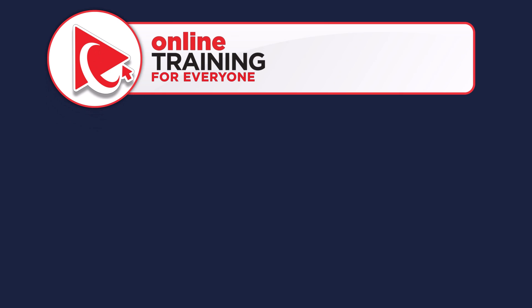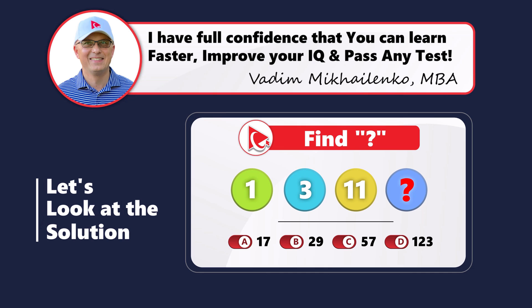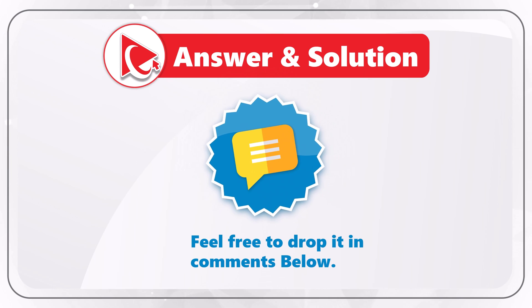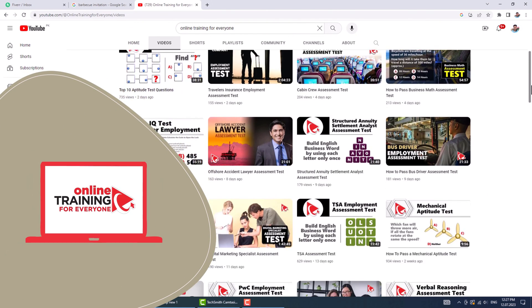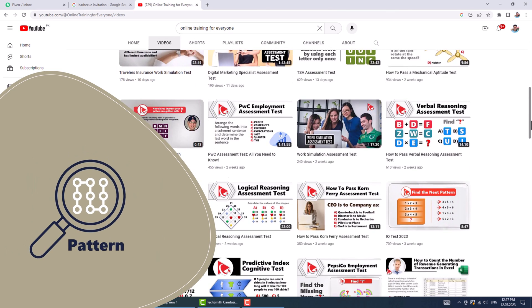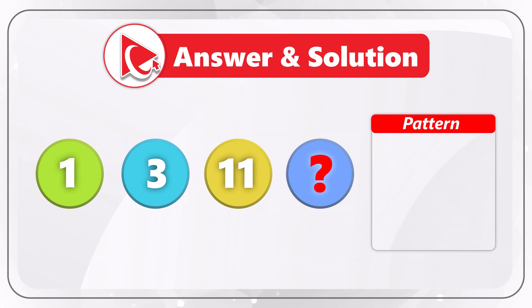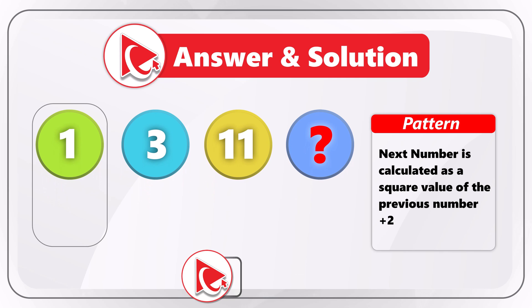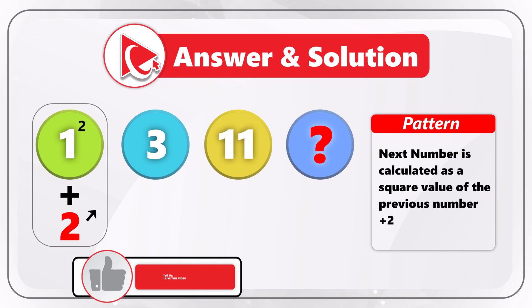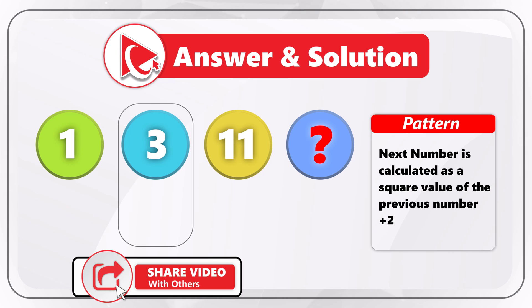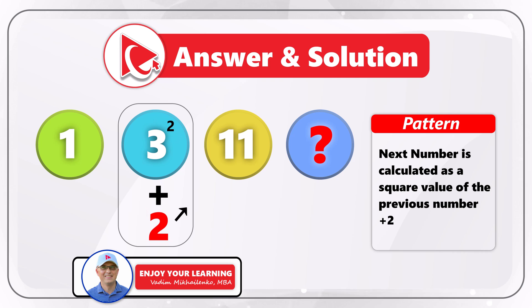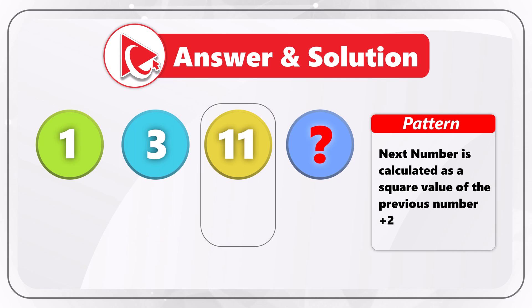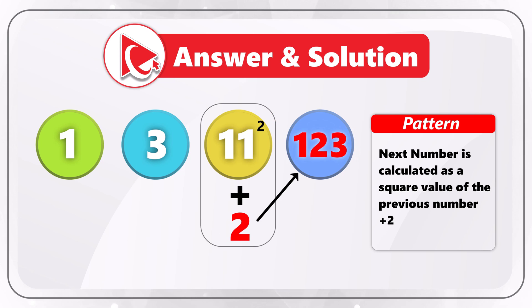Let me transition into revealing the answer to this question. If you came up with a different or more efficient approach, feel free to drop it in comments. If you're a subscriber or frequent visitor to this channel, you know the key is to determine the pattern. The pattern here is that the next number is calculated as the square of the previous number plus 2. The first number is 1; 1 squared plus 2 equals 3. Then 3 squared plus 2 equals 11. So the missing number is 11 squared, which is 121, plus 2, which equals 123. The correct answer is choice D: 123.